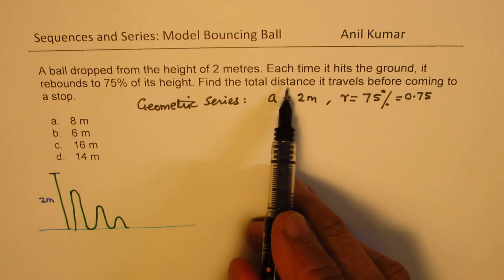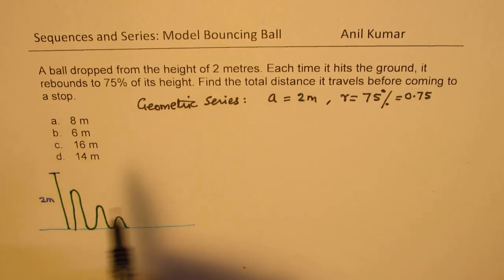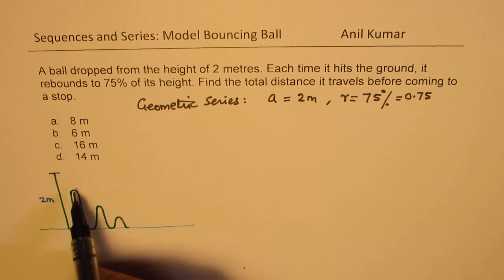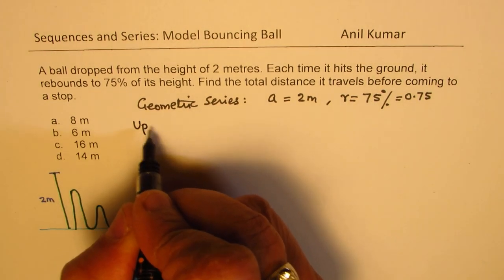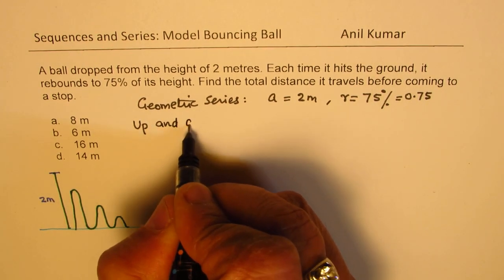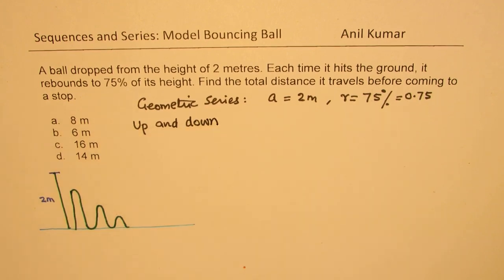We need to find total distance. So as you can see here distance is coming down as well as going up. So the total distance is both up and down distance. This is important to understand.